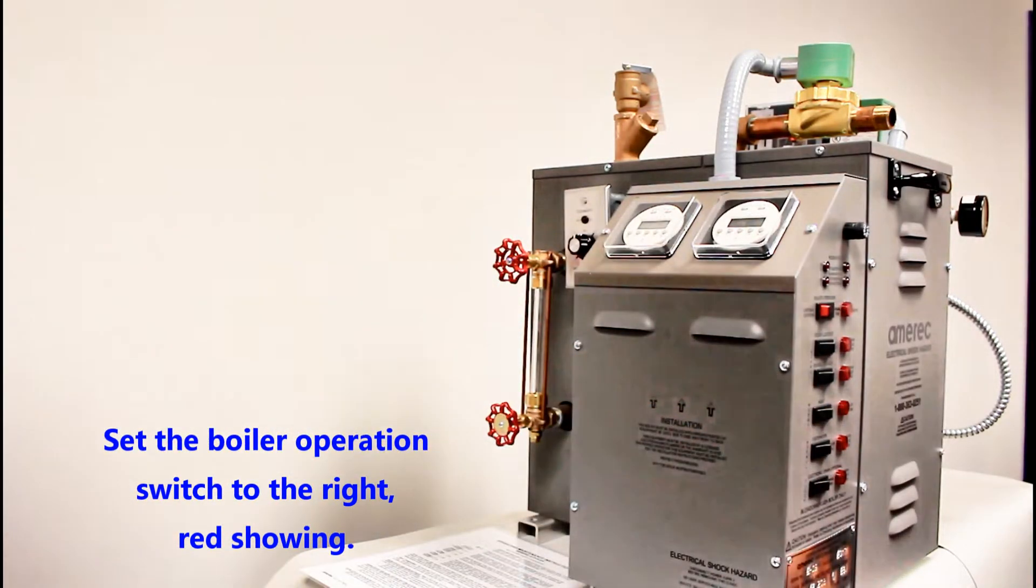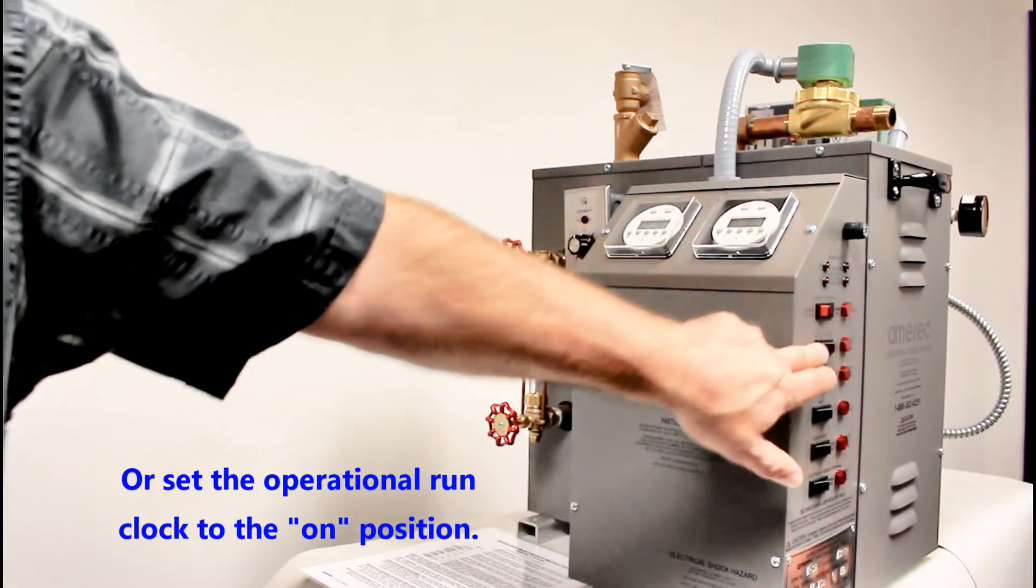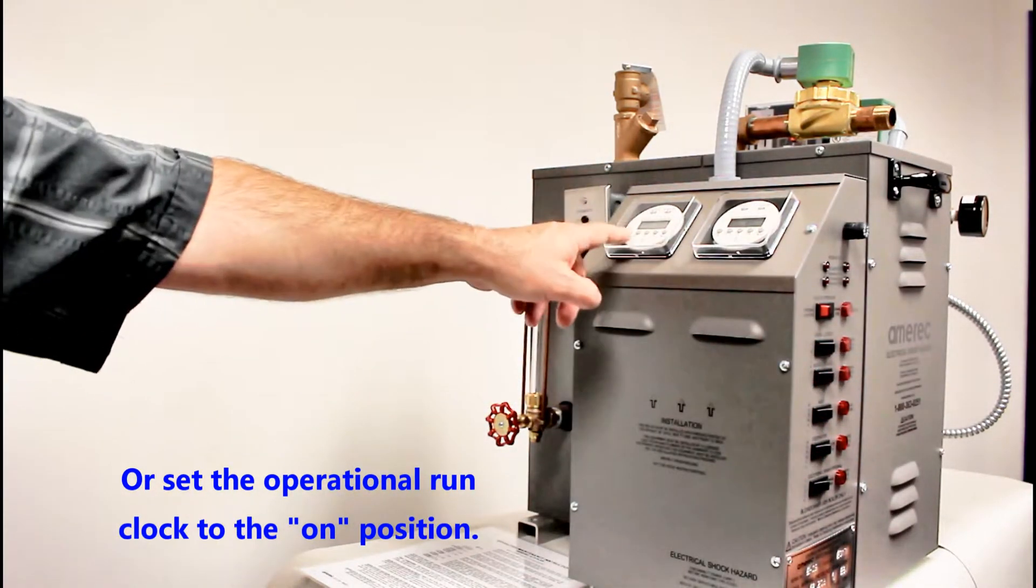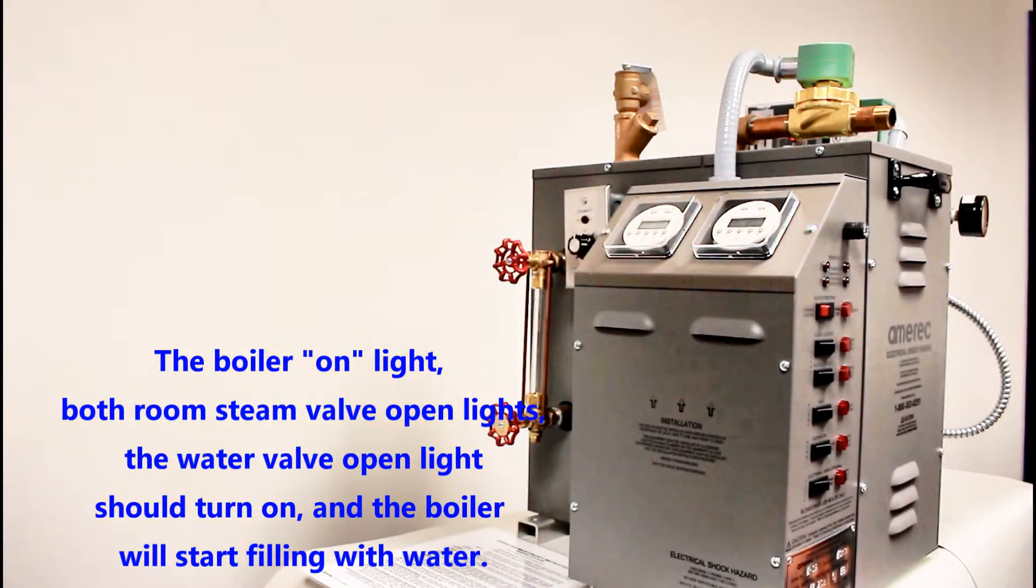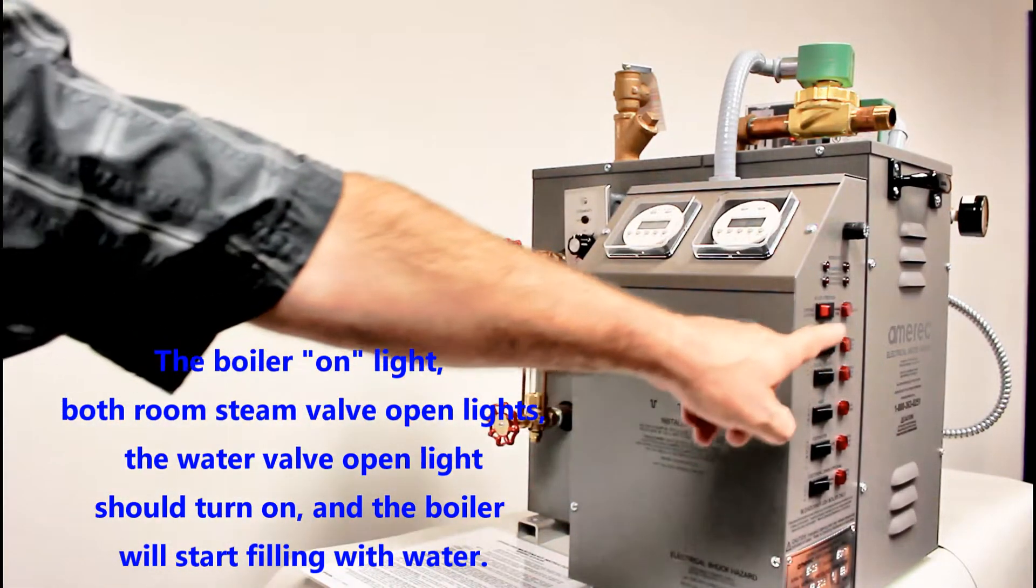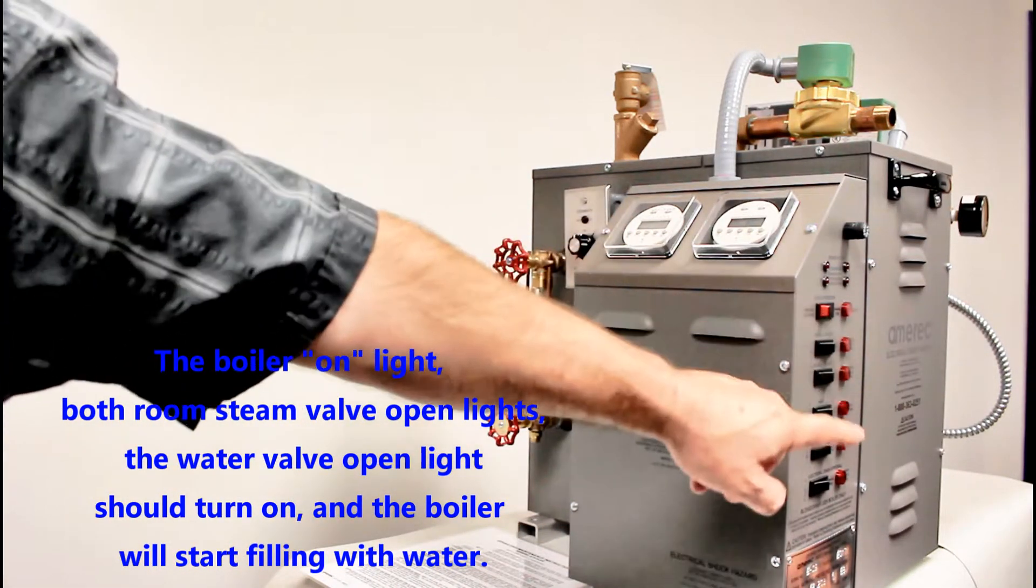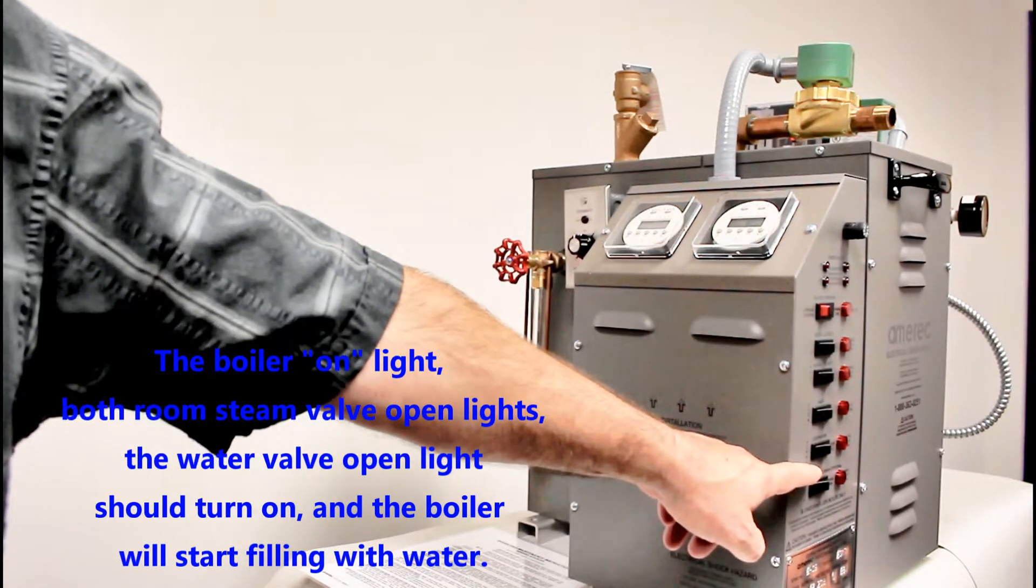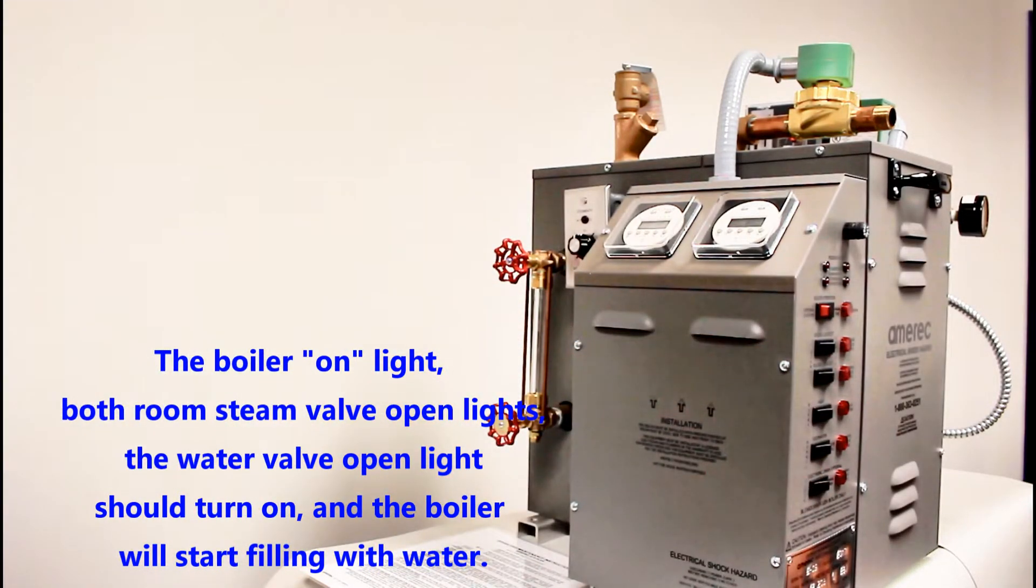Set the boiler operation switch to the right, red showing, or set the operational run clock to on position. The boiler on light, both room steam valve open lights, and the water valve open light should turn on and the boiler will start filling with water.